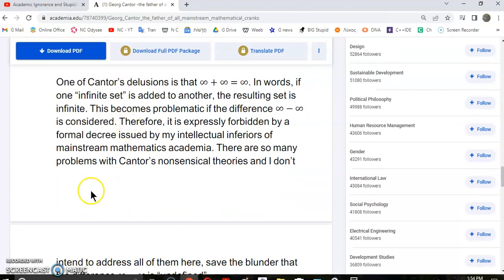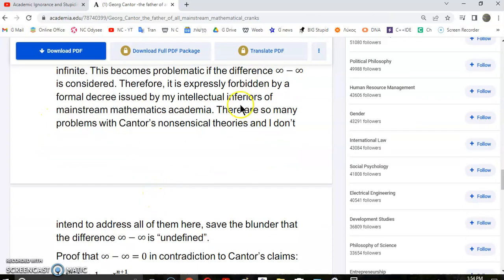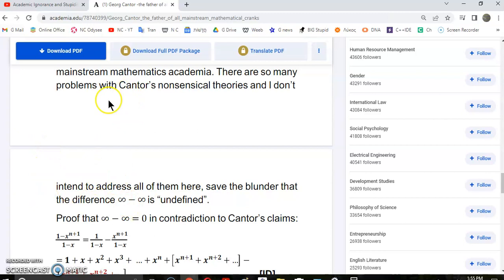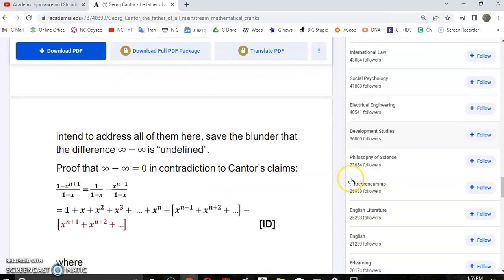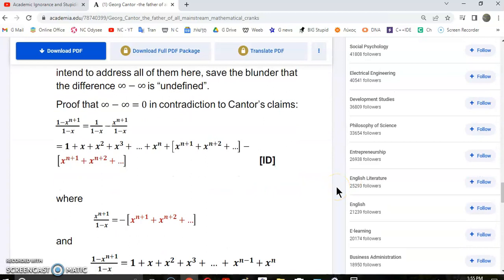One of Cantor's delusions is that infinity plus infinity equals infinity. In words, one infinite set added to another gives the resulting set that is infinite, and this becomes problematic if the difference infinity minus infinity is considered. Therefore, it is expressly forbidden by formal decree. There are so many problems with Cantor's idiotic ideas and theories that I don't intend to address all of them here, save the blunder that difference is undefined. In the following proof, I shall show you categorically using Cantor's bogus theories that infinity minus infinity equals zero, in contradiction to his claims.